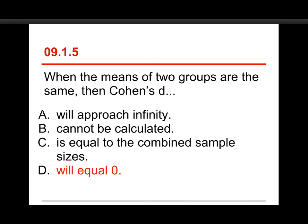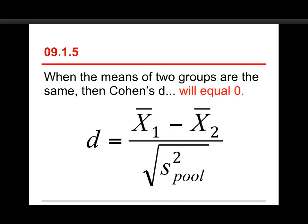Will approach infinity, that happens if you're dealing, for instance, with logarithms and zero, it doesn't work. It cannot be calculated, no, we can do it, even when they're identical. Equal to the combined sample sizes, that's something I just threw in, that's nothing. Again, look at the formula here. Cohen's d, in the two-sample case, you have the mean of the first group, you subtract the mean of the second group. Well, if they're the same number, then a number minus itself is zero. And it doesn't even matter what's in the bottom part, because if zero is in the numerator, then the ratio, d, is zero always.